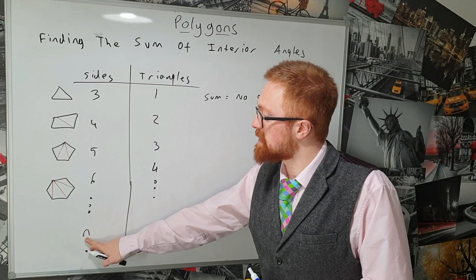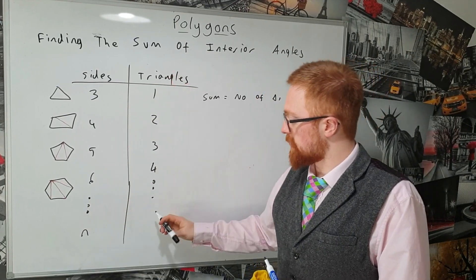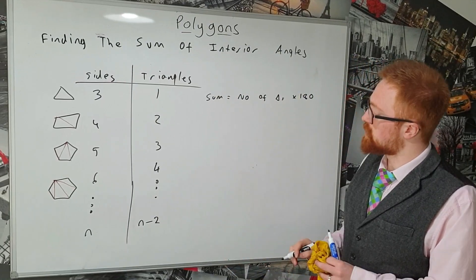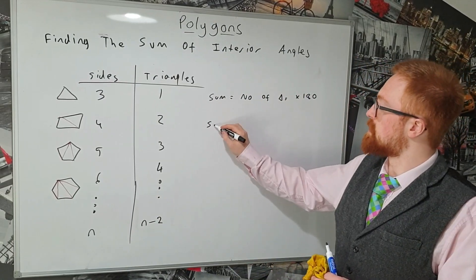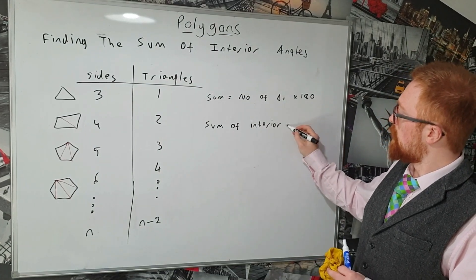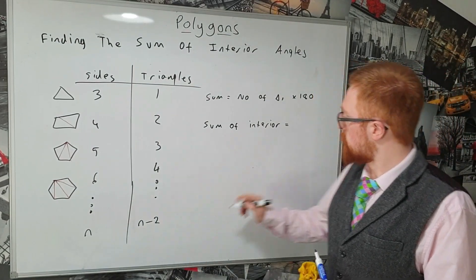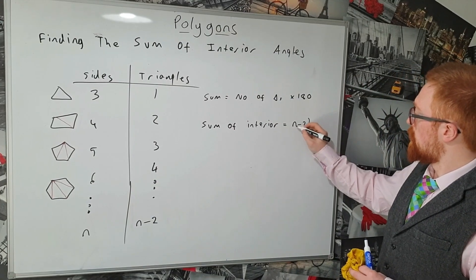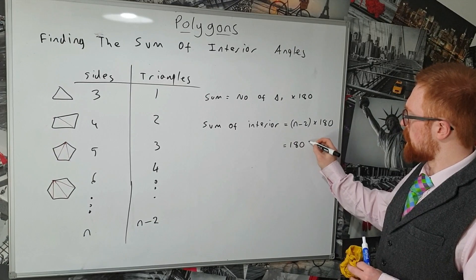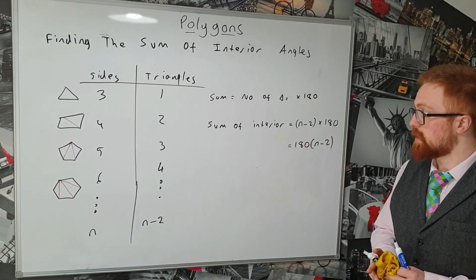So if I've got n sides, the number of triangles I can split that up into is n take away two. So the sum of our interior angles is equal to n minus two times 180, or written slightly more concisely, 180(n - 2). There you go.